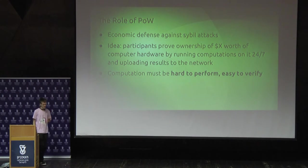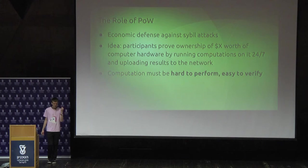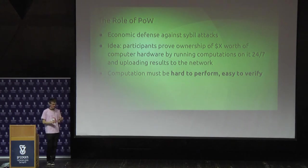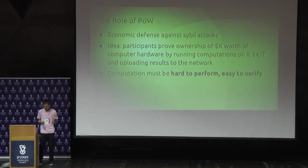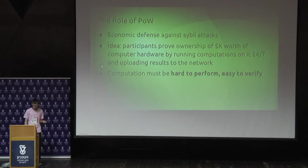The role of proof of work is that it is an economic defense against Sybil attacks. In order to have one unit of participation in voting, you have to prove ownership of some number of dollars worth of computer hardware. You need to prove ongoing ownership of computer hardware — you can't just keep trading your computer around. The way you prove ongoing ownership is by running computations on it 24/7 that fully exhaust that computer's computational capacity, and uploading the results to the network.